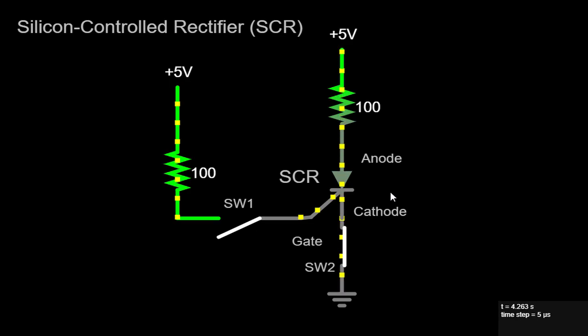Essentially, once the SCR is triggered, it latches into the conducting state until the current flowing through it drops below a specific threshold called the holding current.